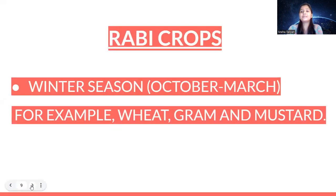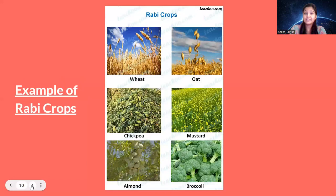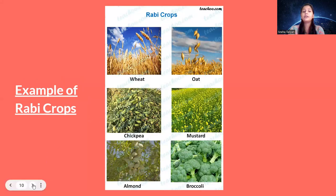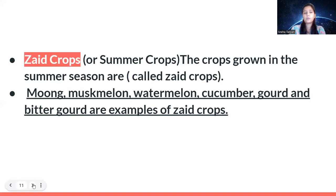Rabi crops are called the winter season crops, grown from October to March. Examples include wheat, gram (chana), mustard (sarson), oats, chickpea, almond, and broccoli. These are all examples of rabi crops.